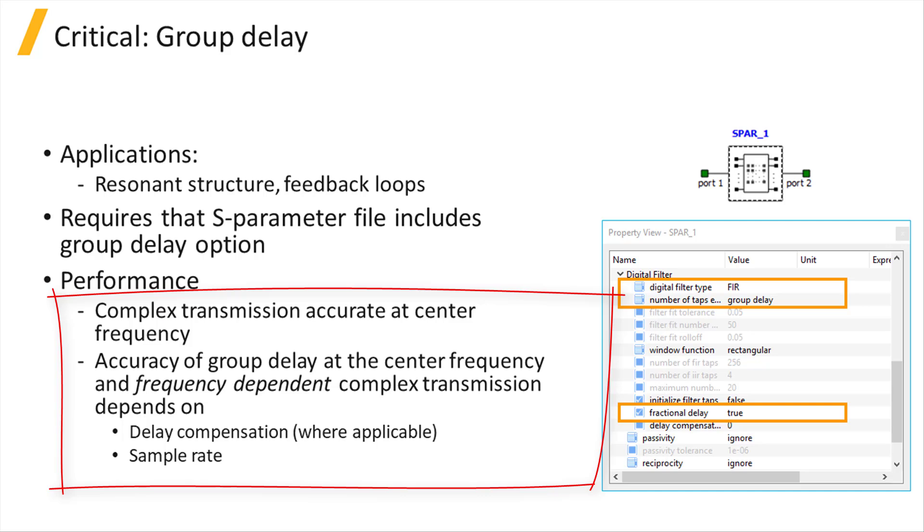The accuracy of the group delay at the center frequency and the frequency-dependent transmission amplitude depend on the delay compensation and sample rate.